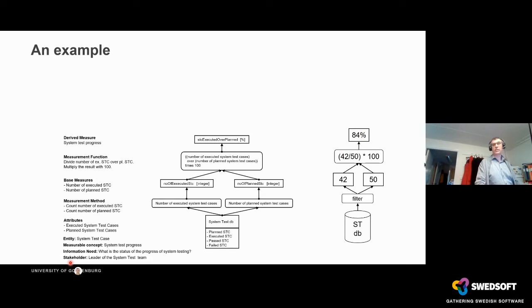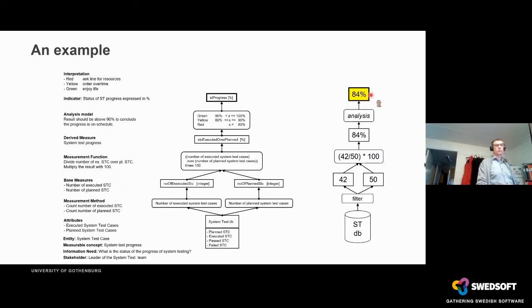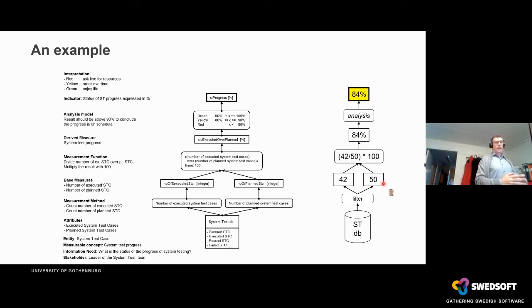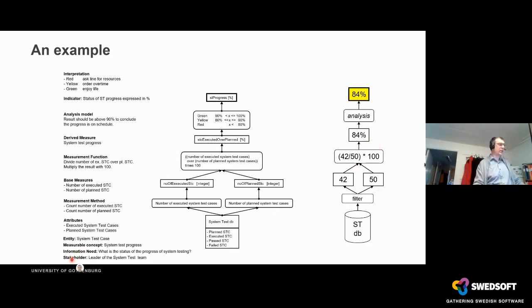The stakeholder is not interested in the raw calculation because he cannot use it directly. According to this standard, we have two types of measures: derived measures and base measures. An indicator is a measure that has three more things attached to it: a stakeholder, an analysis model telling the stakeholder the status — green, yellow, or red — and defined actions to take as a stakeholder when the indicator is yellow, for instance.